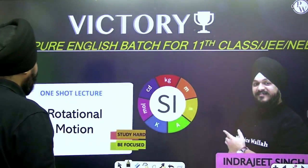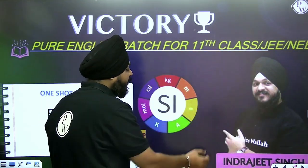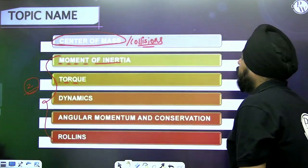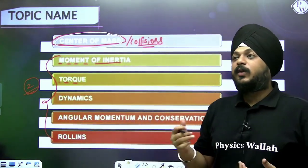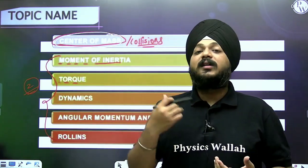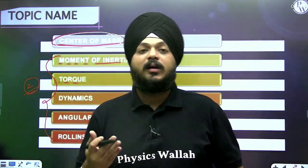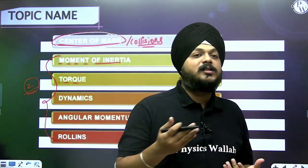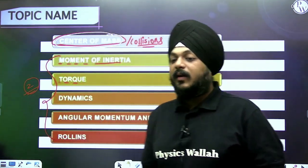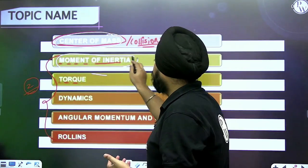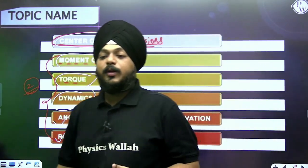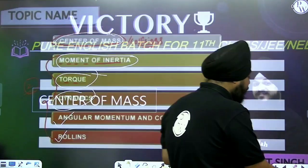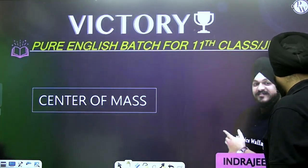Today will be an awesome one-shot lecture on rotational motion. We are going to start with the moment of inertia. In the previous session, we saw the center of mass for discrete particles, continuous bodies, combined bodies, bodies with cavities, and the motion and acceleration of the center of mass.